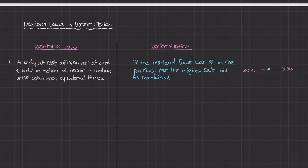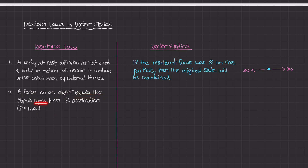Let's move on to Newton's second law. Newton's second law simply states that the forces on an object equal the object's mass times its acceleration — you might know it as F equals ma, one of Newton's most famous equations. In statics, when an object is in static equilibrium, its acceleration is zero. And if acceleration is zero, then the forces acting on that object must equal zero for the object to remain in static equilibrium.